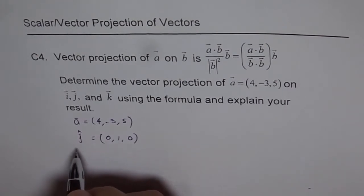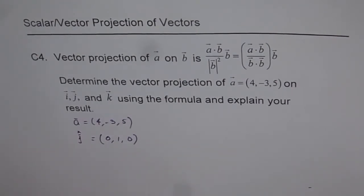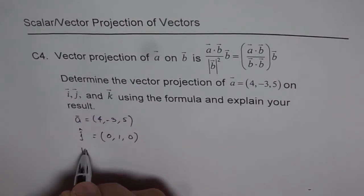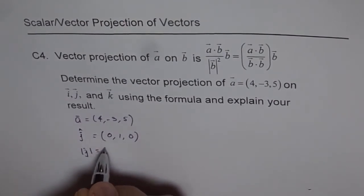That also means that magnitude of j is 1. Unit vector means magnitude of vector j equals 1.